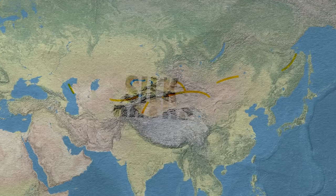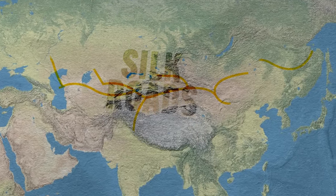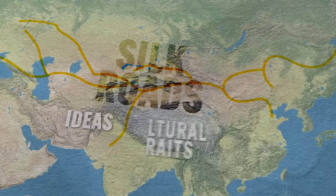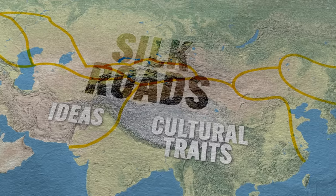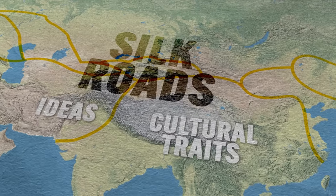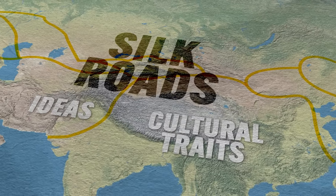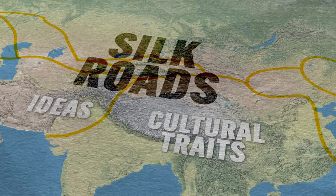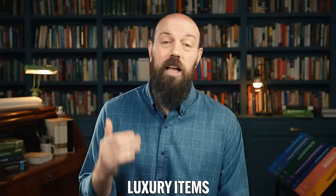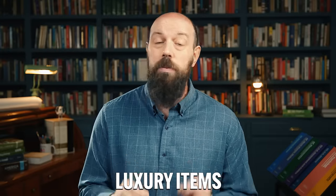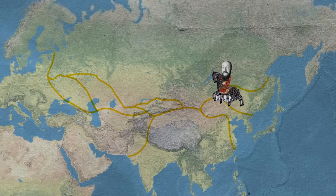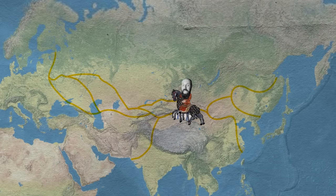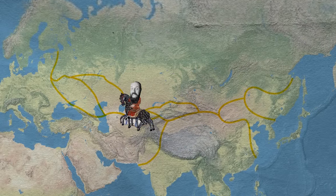These were trading routes first and foremost, but perhaps of equal importance, as trade in goods occurred across these routes, various ideas and cultural traits were exchanged as well — which is what we call cultural diffusion. Across this vast network of roads, it was mainly luxury items that were exchanged, most notably Chinese silk. It was expensive to haul goods from one end of these roads to the other, so selling luxury goods was the only way to earn prodigious amounts of profits.